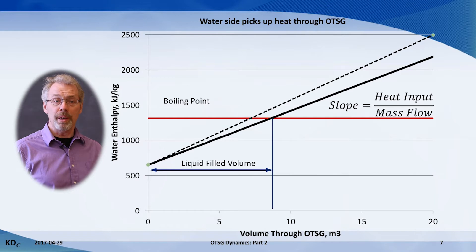If the firing rate increases, then there is more heat added through the OTSG volume, and the OTSG produces higher enthalpy and higher quality steam. This makes sense. This is represented on our graph as the line having a steeper slope.